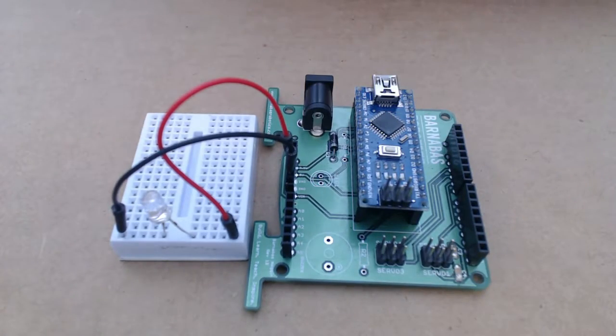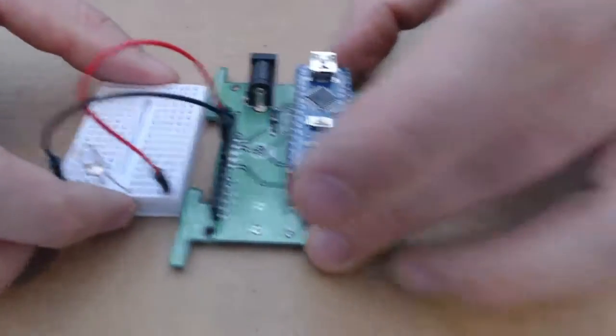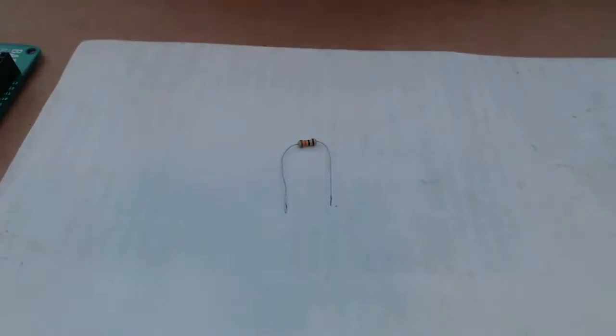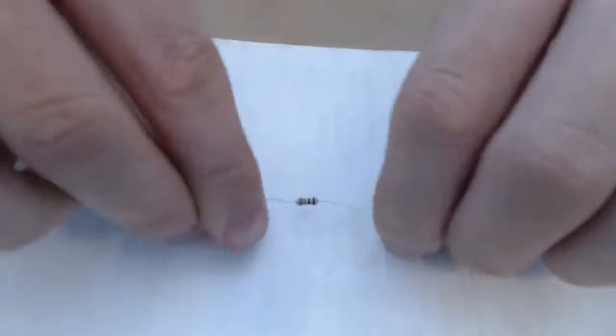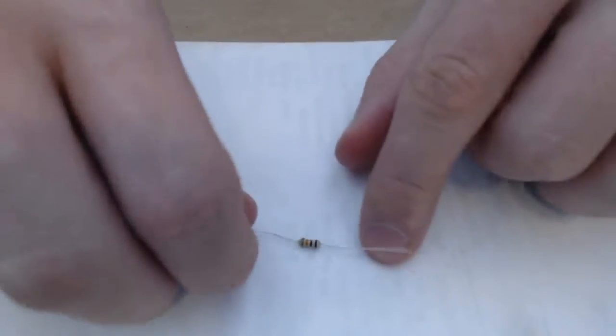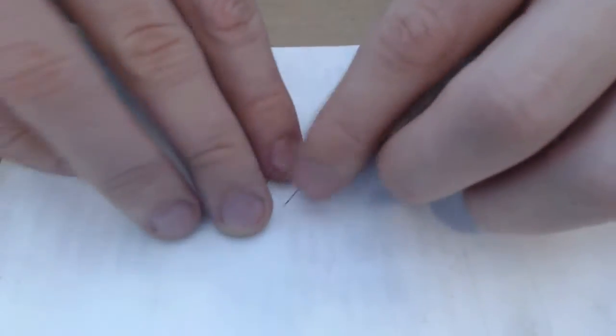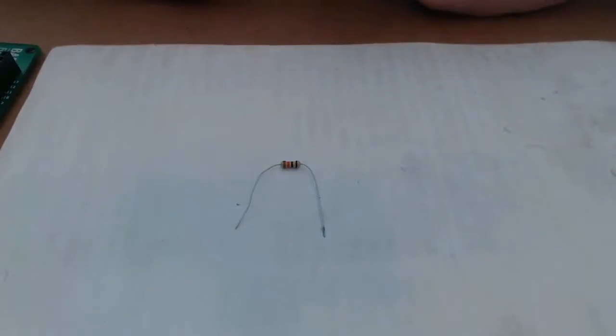So what we need to do is we need to introduce the idea of resistance into the circuit. So I have here a resistor. It has two legs and then it has several colored bands on it which tell you what kind of resistor it is, how many ohms it provides. So this resistor is a 10,000 ohm resistor.